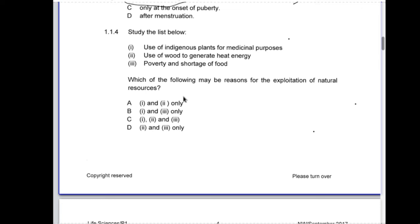Study the list below: use of indigenous plants for medicinal purposes, use of wood to generate heat energy, and poverty and shortage of food. Which of the following may be reasons for the exploitation of natural resources? Indigenous plants for medicinal purposes, yes. Use of wood to generate heat energy, yes. Poverty and shortage of food doesn't quite match. But the correct answer for 1.1.4 is...